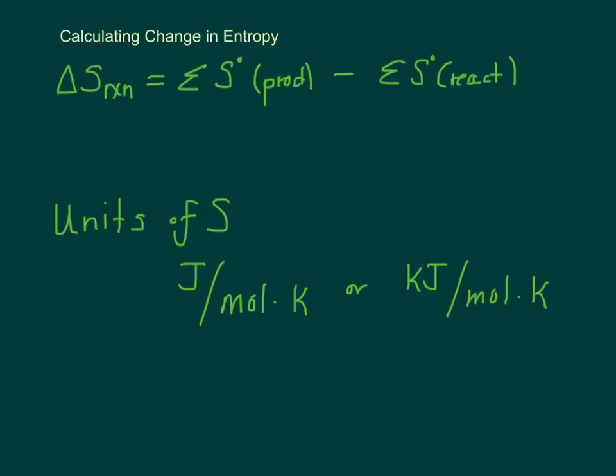And then we can actually, if we want to, this formula might look a little familiar. It's the same kind of formula we use for the heats of formation, where we said delta H was the sum of the heats of formation of the products, minus the sum of the heats of formation of the reactants. So here it's the same thing. The change in entropy of your reaction is the sum of all the entropies of the products minus the sum of all the entropies of the reactants. So add all the products and subtract all the reactants. Your units of entropy are joules per mole Kelvin or kilojoules per mole Kelvin. They're usually given in joules per mole Kelvin.